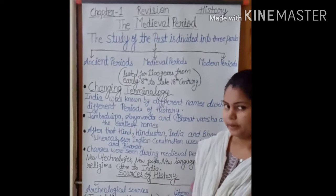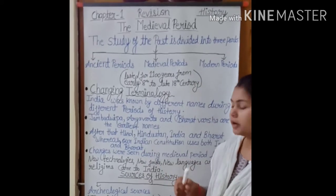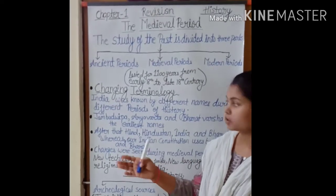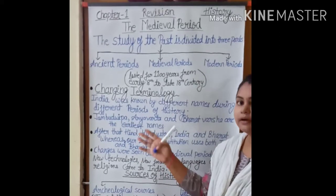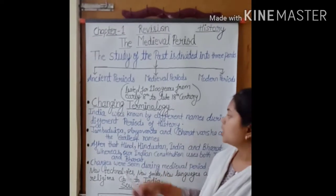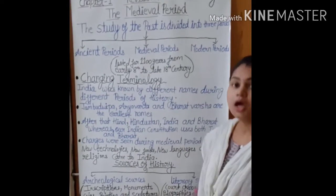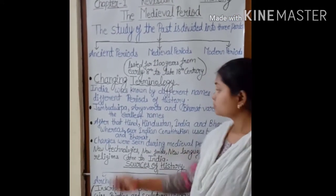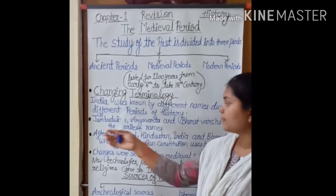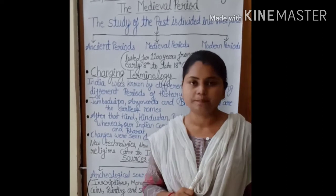Our next topic is changing terminology. In this topic we learned about the different names of India — the name of our country changed from time to time at different phases. India was known by different names during different periods of history. The earliest names of India were Jambu Dweep, Arya Vardh, and Bharat Vardh. These were the oldest names of our country.